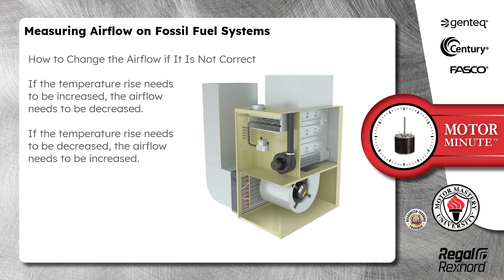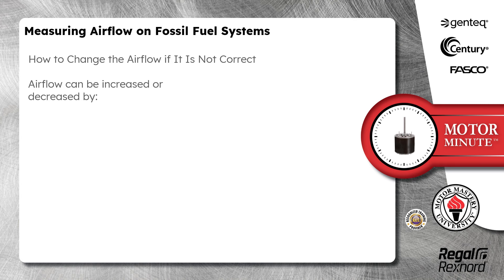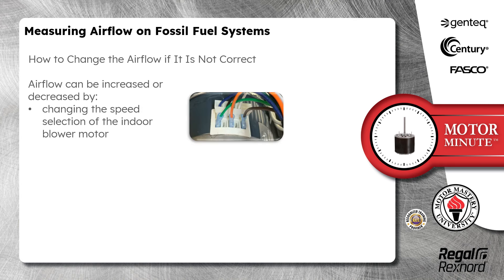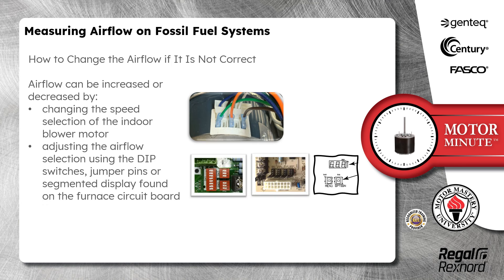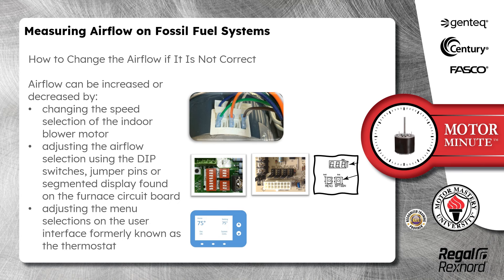If the temperature rise needs to be increased, the airflow needs to be decreased. If the temperature rise needs to be decreased, the airflow needs to be increased. Airflow can be increased or decreased by changing the speed selection of the indoor blower motor, adjusting the airflow selection using the dip switches, jumper pins, or segmented display found on the furnace circuit board, or adjusting the menu selections on the user interface, formerly known as the thermostat.